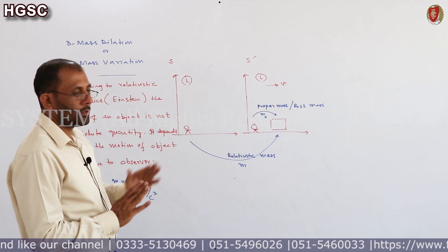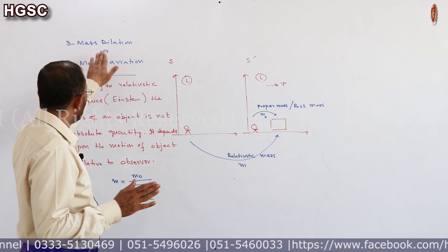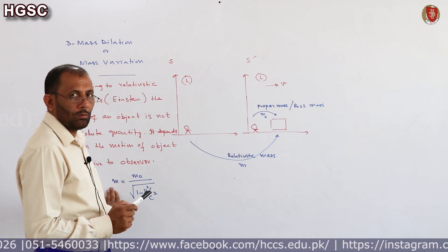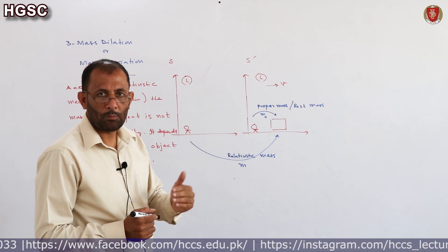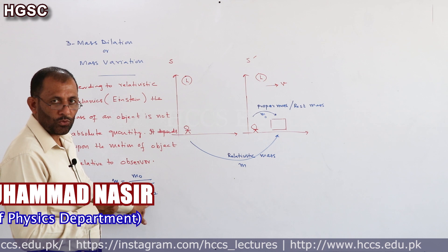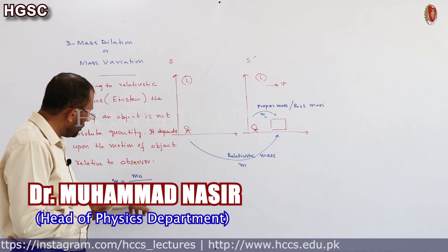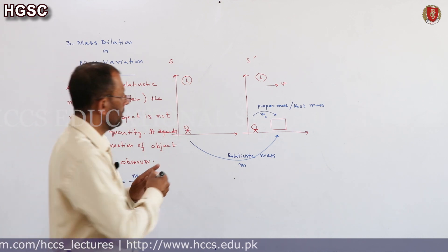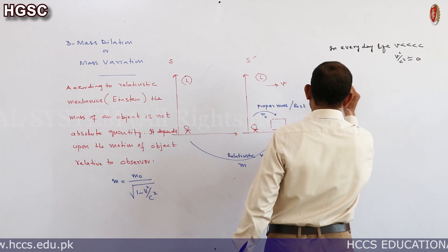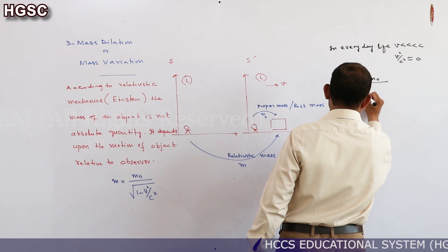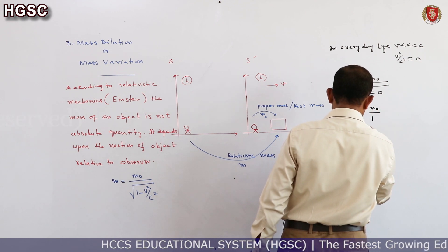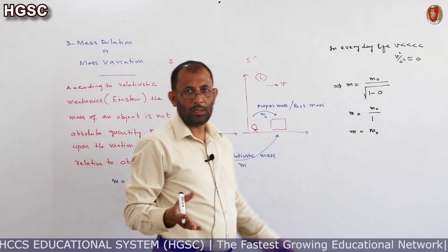Mass dilates as: m = m₀ / √(1 − v²/c²). لیکن یہ result اس وقت hold کرے گا جب velocity comparable to the velocity of light ہوگی۔ Everyday life میں v is very very small as compared to c, so we neglect v²/c². Putting zero there: m = m₀ / √(1−0) = m₀ / 1 = m₀. In everyday life v is much smaller than c, so v²/c² becomes negligible and m equals m₀.